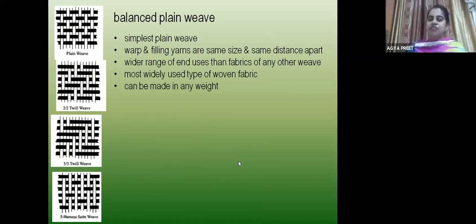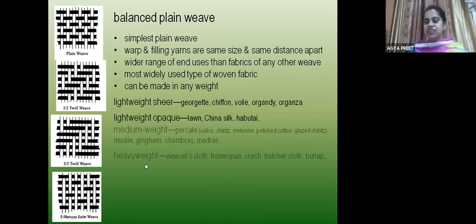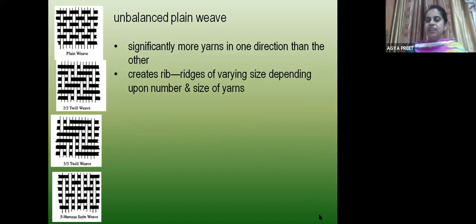In a balanced plain weave, warp and filling yarns are of the same size and equal spacing — this is the balanced weave. Types include light weight sheer, light weight opaque, medium weight and heavy weight. In an unbalanced plain weave, there are more yarns in one direction than the other, which creates ridges — including light weight ribbed fabric and medium weight ribbed fabric.